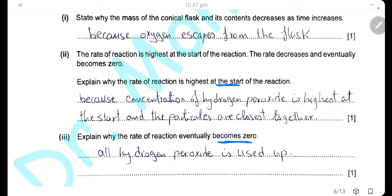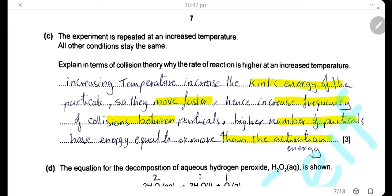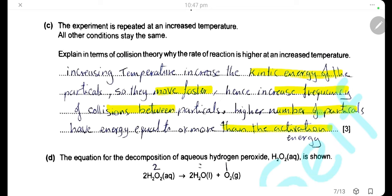When the experiment is repeated at a higher temperature with all other conditions the same, the rate of reaction is higher. In terms of collision theory: increasing the temperature increases the kinetic energy of the particles, so particles move faster, increasing the frequency of collisions between particles. Also, more particles will have energy equal to or greater than the activation energy needed for the reaction.